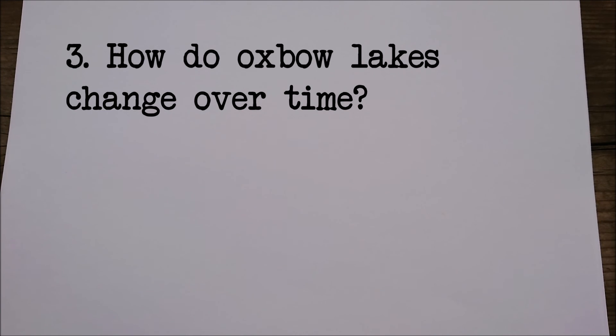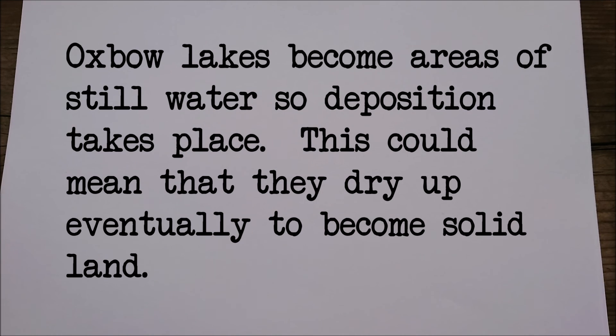Question three: How do oxbow lakes change over time? Well, oxbow lakes become areas of fairly still water, and as a result of that, deposition takes place within them. And this could mean that oxbow lakes dry up eventually over time.